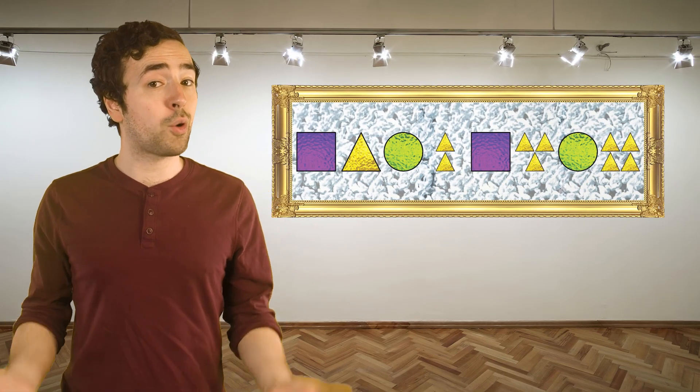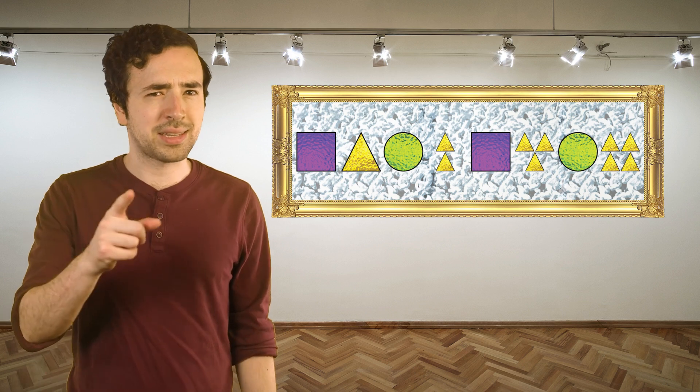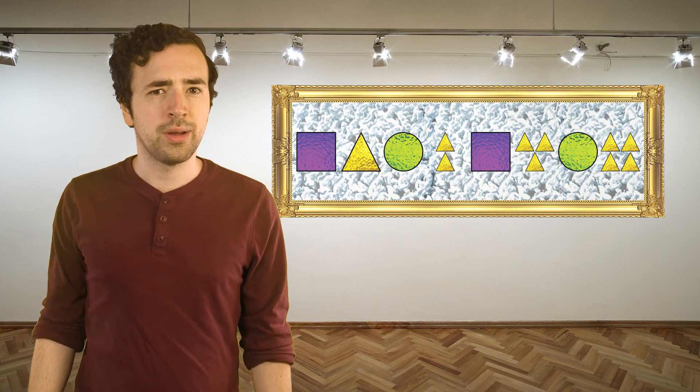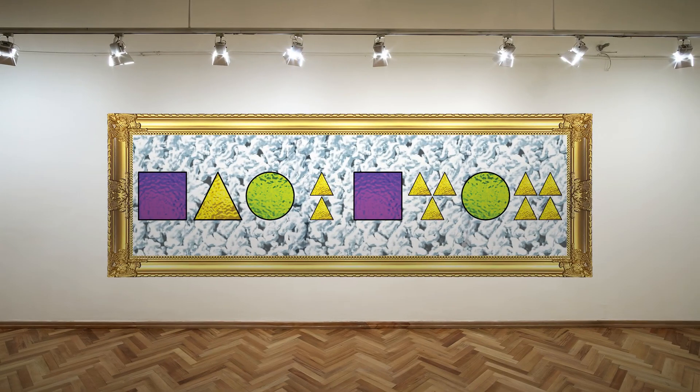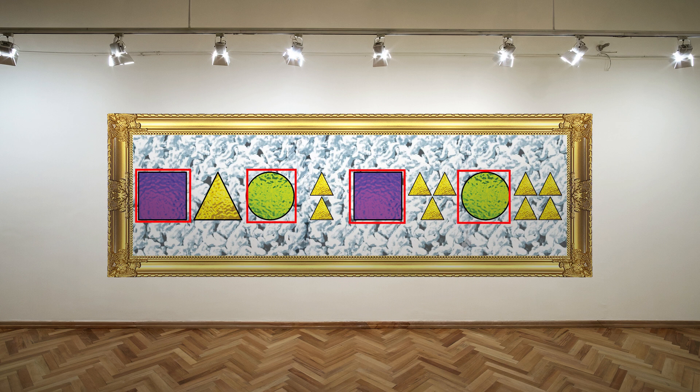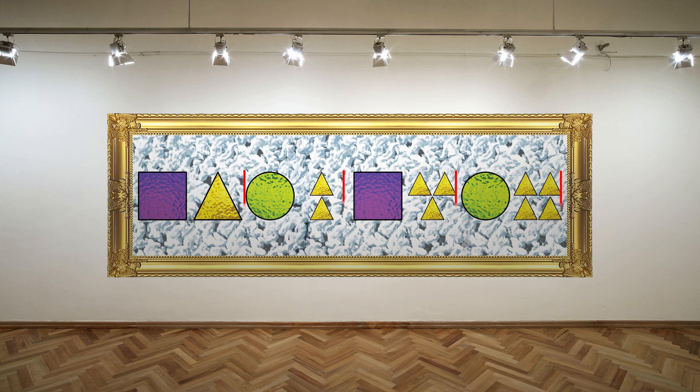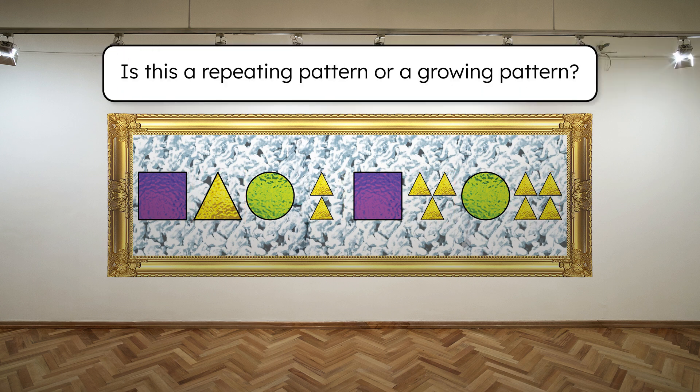Now that we've learned about repeating and growing patterns, we can figure out that stained glass art we saw earlier. What do you notice about its pattern? Part of the design repeats with the squares and circles, but the number of triangles is increasing each time they appear. So is this a repeating pattern or a growing pattern? At first, it might look like both. After all, the shapes appear in the same order each time: square, triangle, circle. But the number of triangles increases each time. Since that part isn't staying exactly the same, it's a growing pattern.